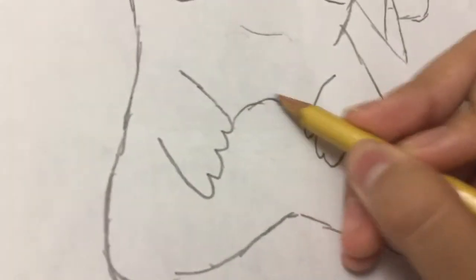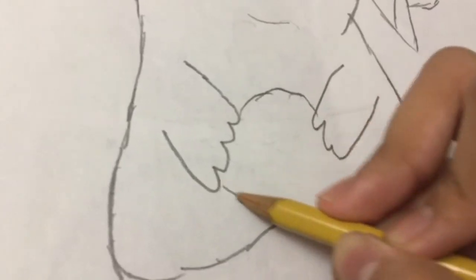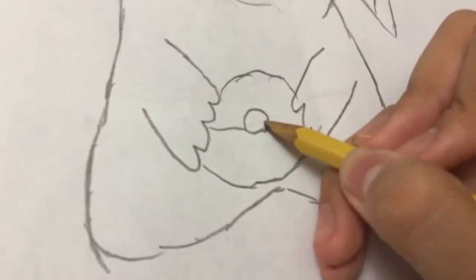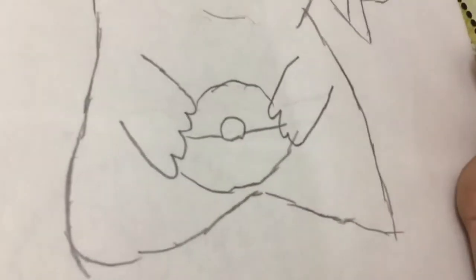And, draw the Pokeball, right here. And, a circle and a line. Then, his tail.